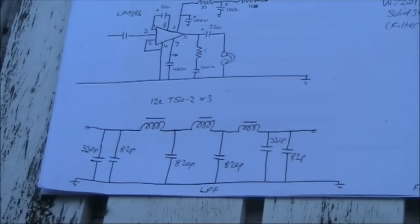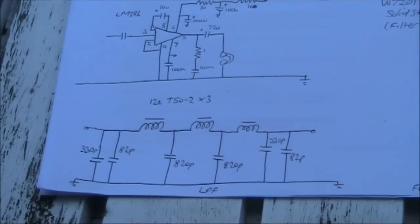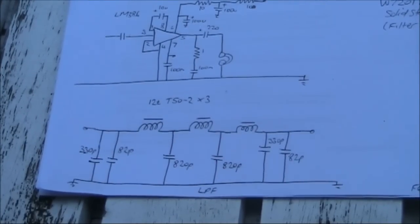Which I haven't shown in the diagram. But it is a double pole, double throw relay. One section switches the 12 volts from the transmitter to the receiver.